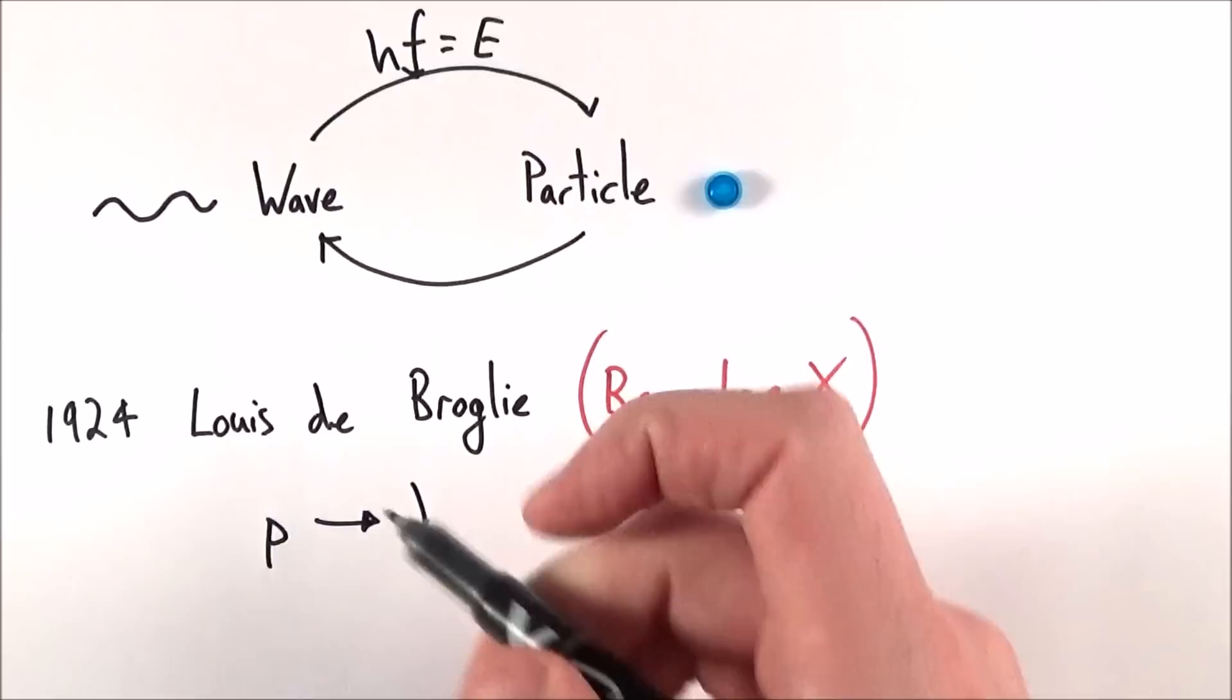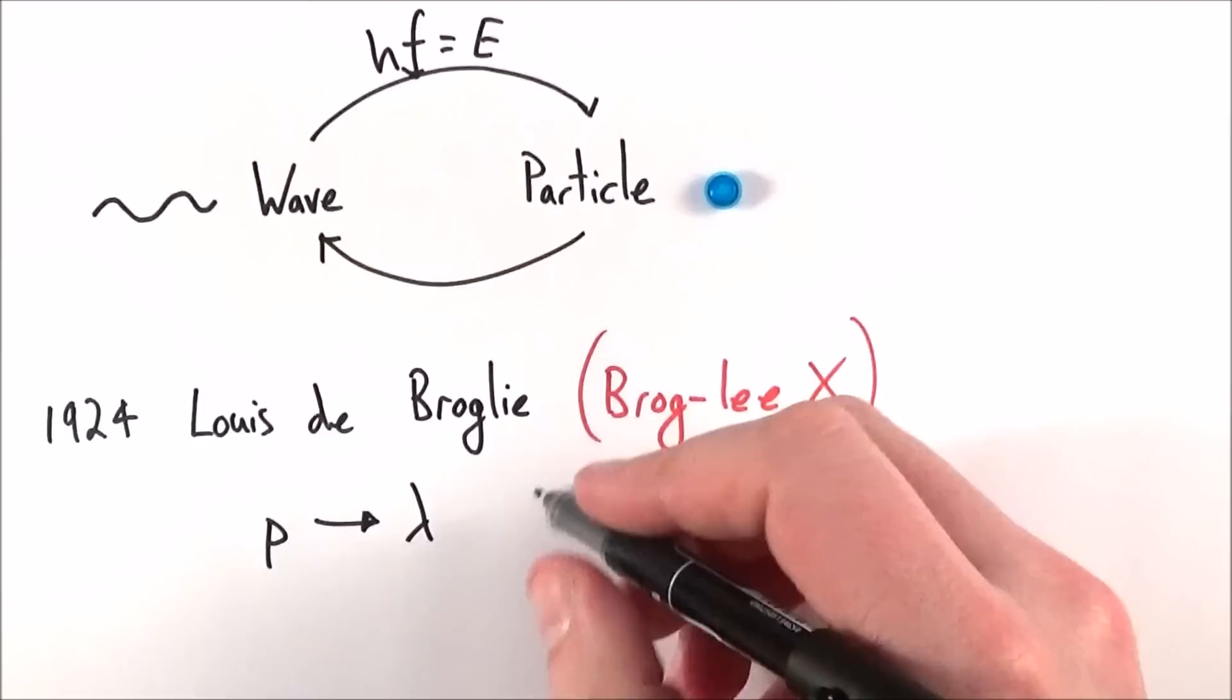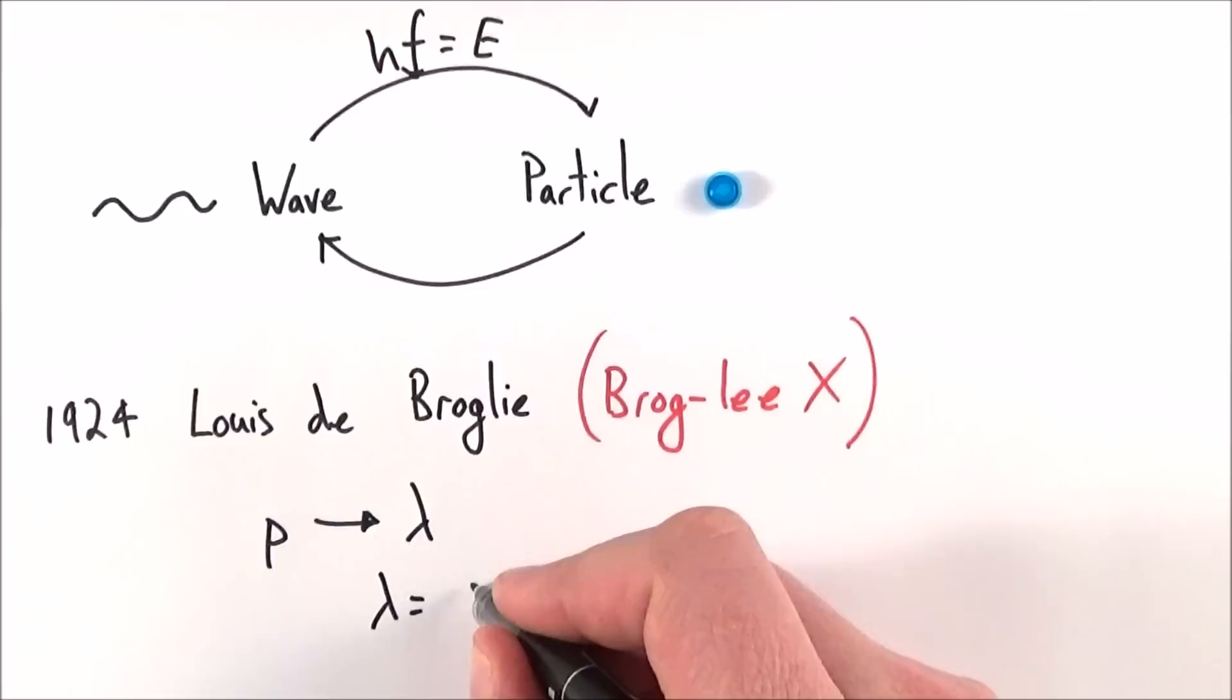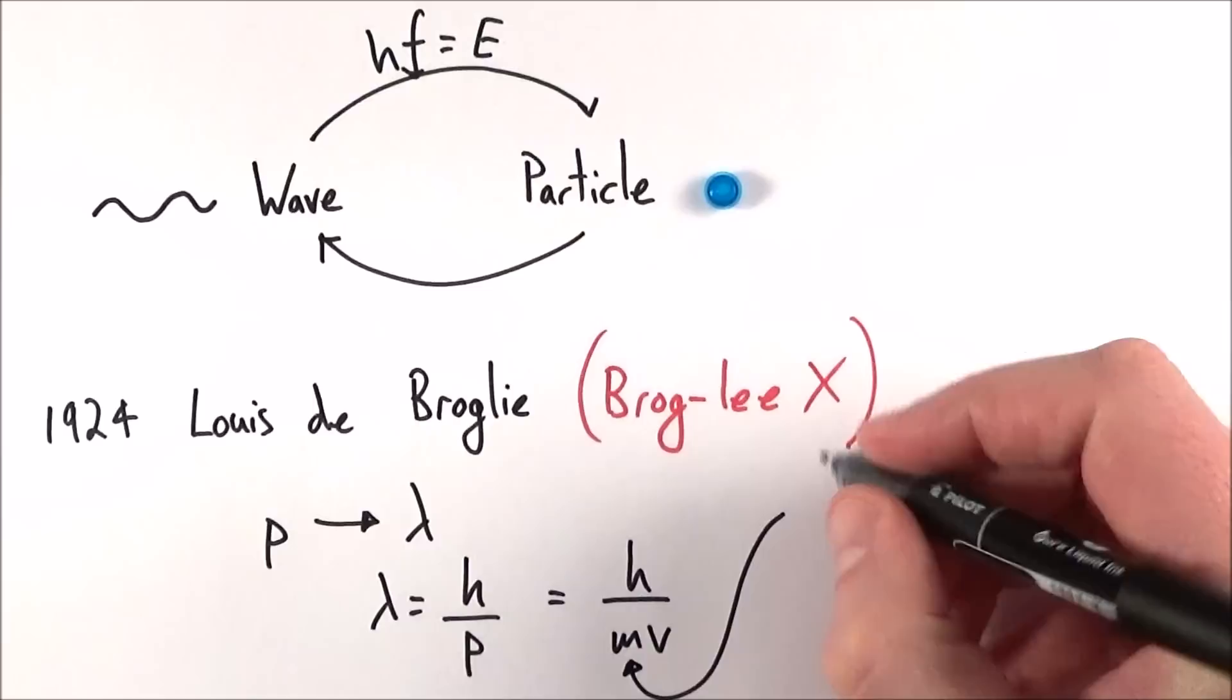And there's some link between the momentum of the particle, which we give the symbol little p, and the wavelength. What he said was that the wavelength of the particle is equal to Planck's constant divided by the momentum, or we can write this as h over mv.